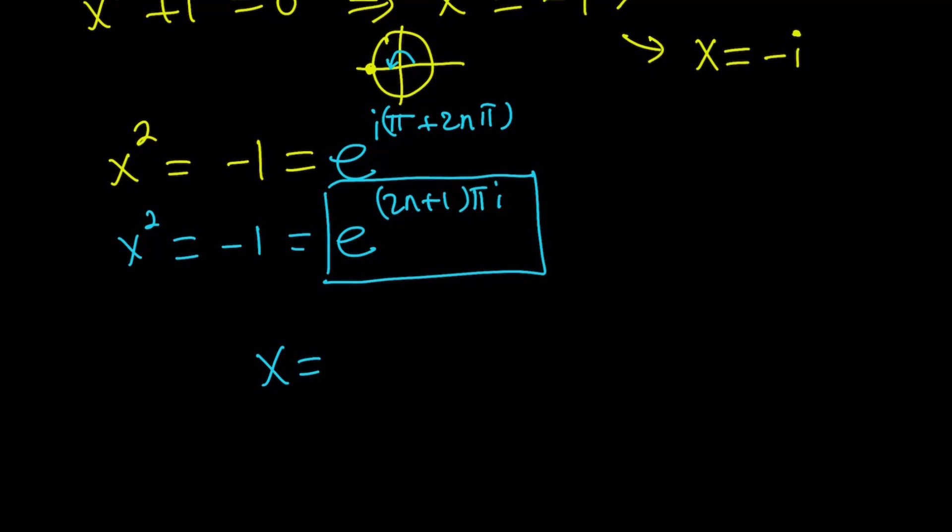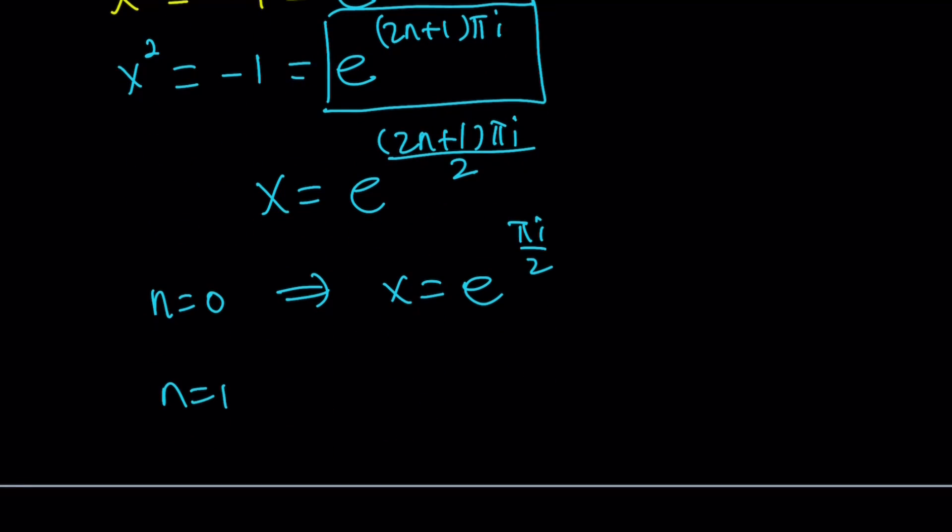So from here, x becomes e^((2n+1)πi/2). And here, if you replace n with 0, you get x = e^(πi/2). And n = 1 is going to give you x = e^(3πi/2).